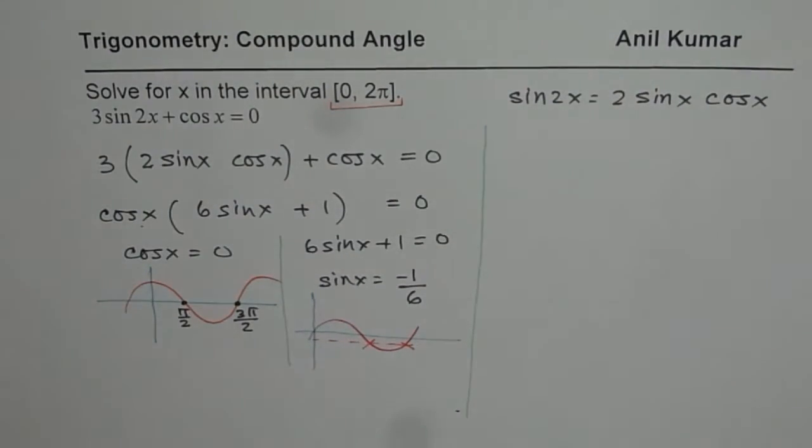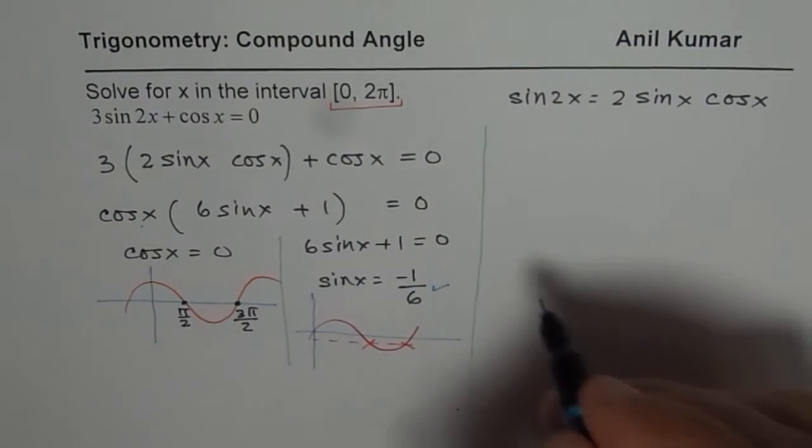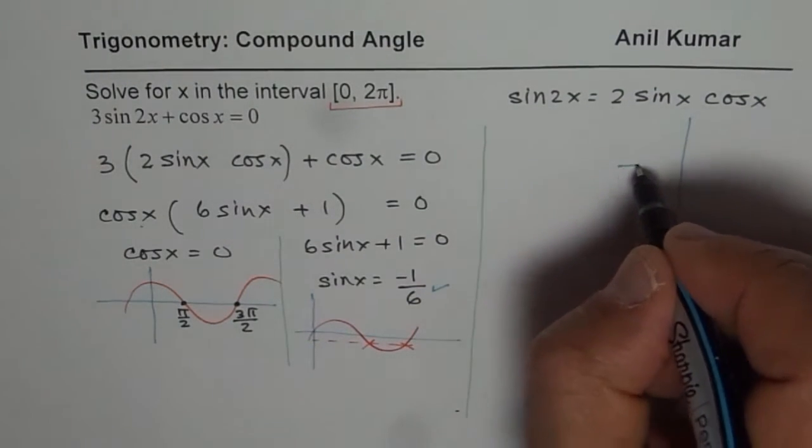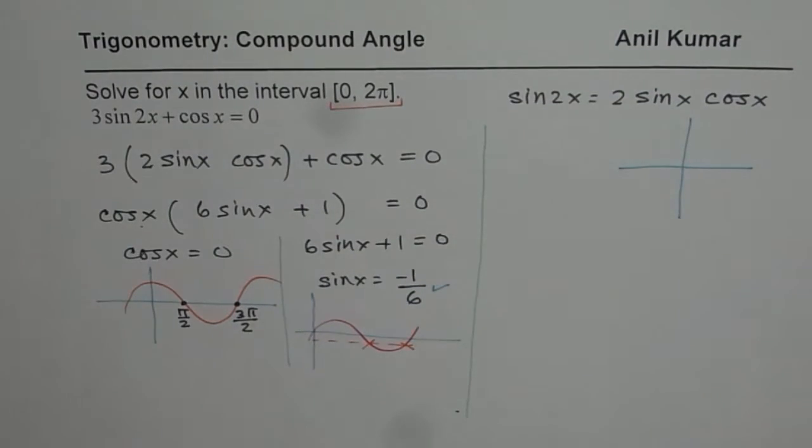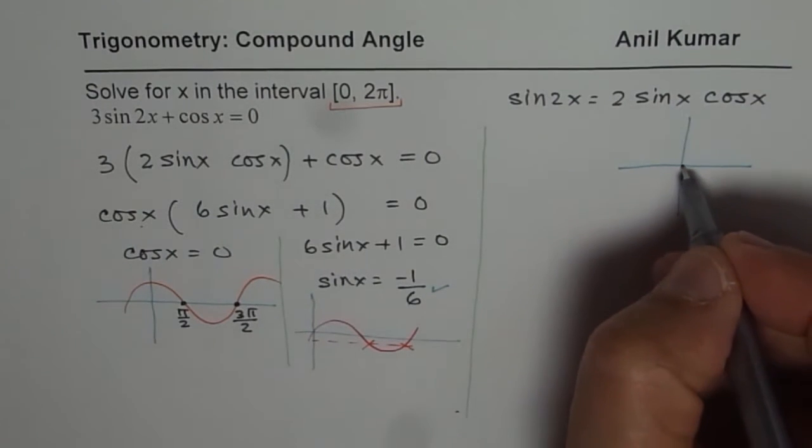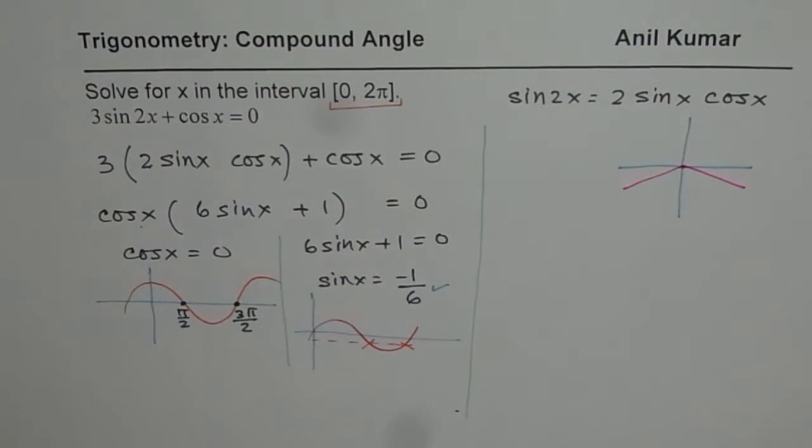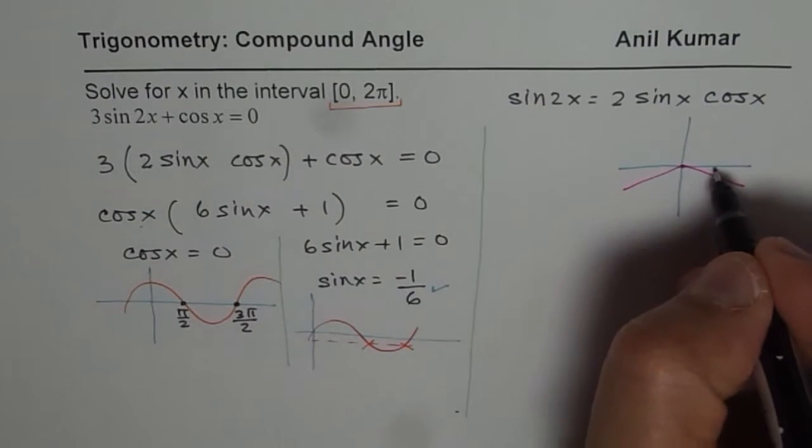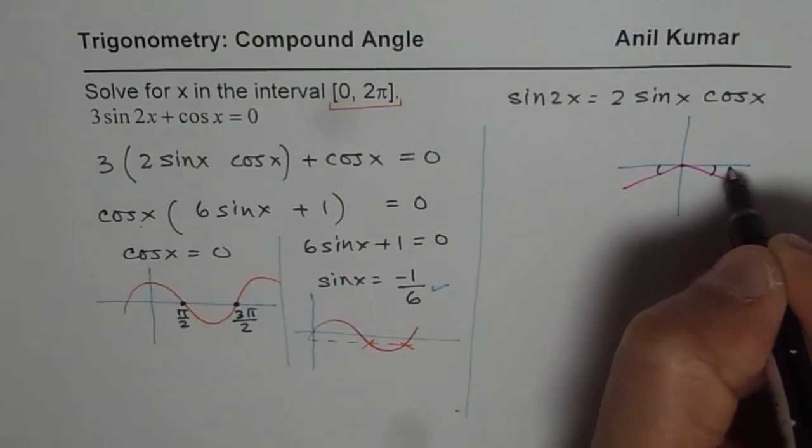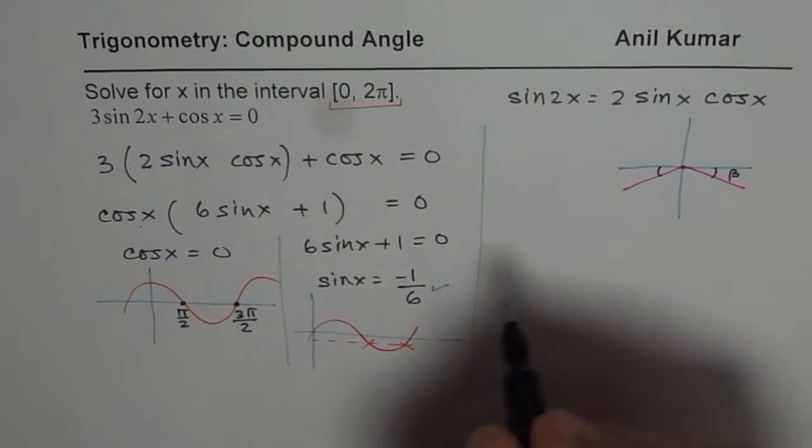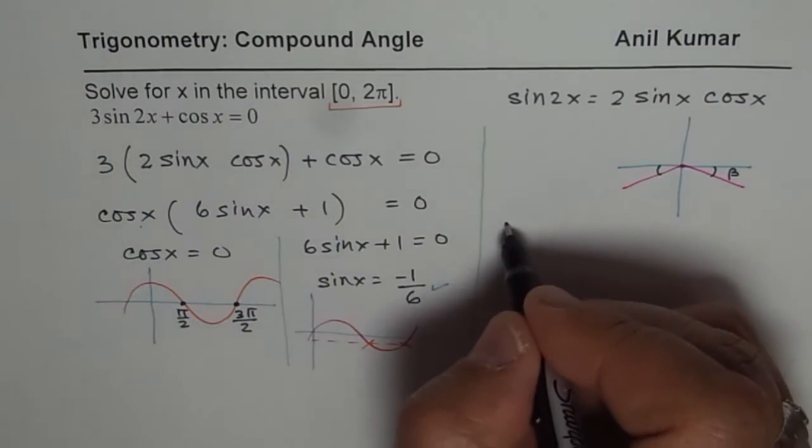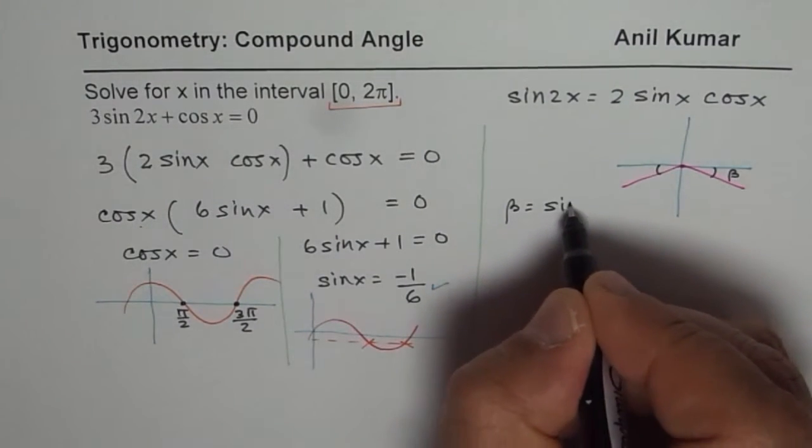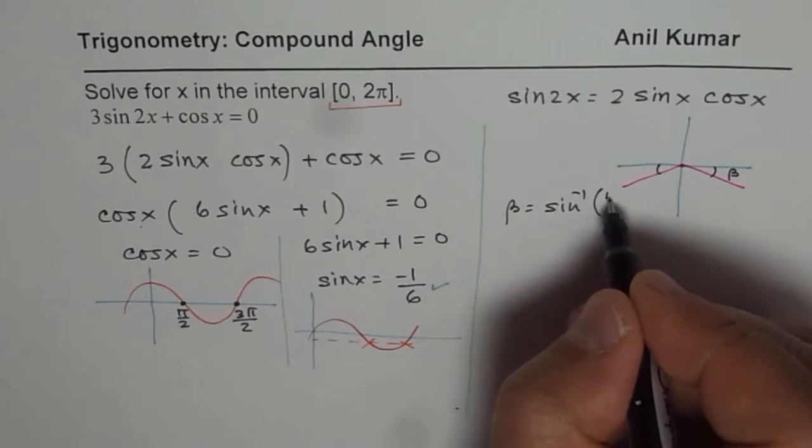So let us understand how to find these solutions. So in a coordinate plane, sin is negative in coordinate 3 and in coordinate 4. So that means we are looking for acute angles in these coordinates. Let this acute angle be beta. So what this angle beta is?